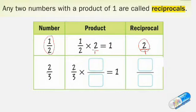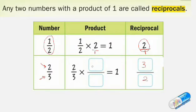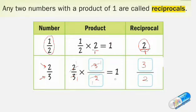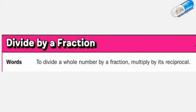The product of 1 over 2 times its reciprocal 2 over 1 equals 1. Another example: if I have the fraction 2 thirds, its reciprocal is 3 over 2 — the denominator becomes the numerator and vice versa. The product of 2 thirds times 3 over 2: 3 cancels with 3 and 2 cancels with 2, giving 1. So the product of any fraction and its reciprocal always equals 1.